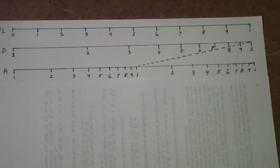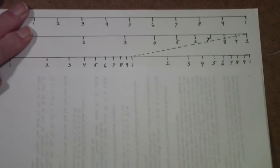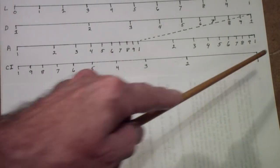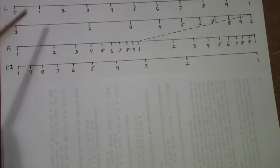Most slide rules also have an L scale, a logarithm scale. But, some rules have what's called an inverted C scale, which is just the same as the D scale, except it's on the slide with the C scale. But it reads from right to left instead of from left to right. But it's otherwise exactly the same scale.